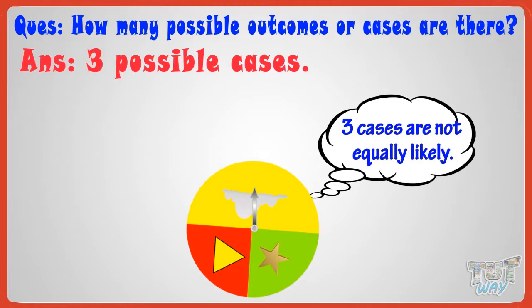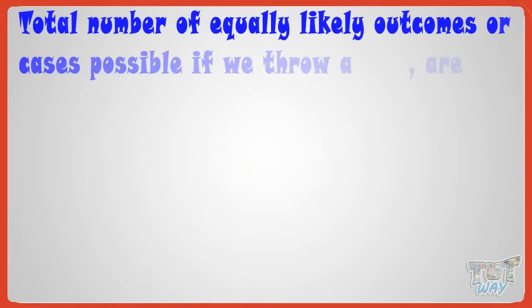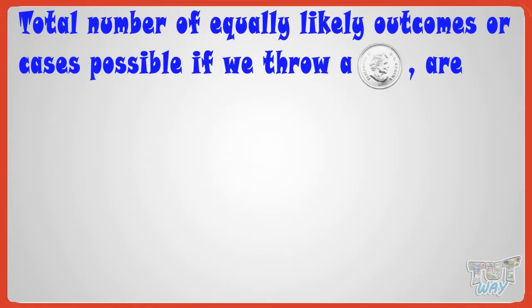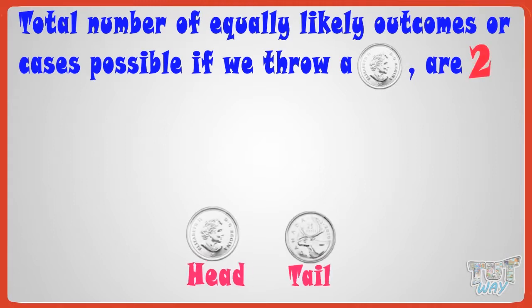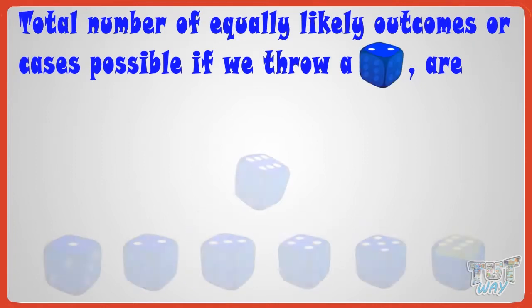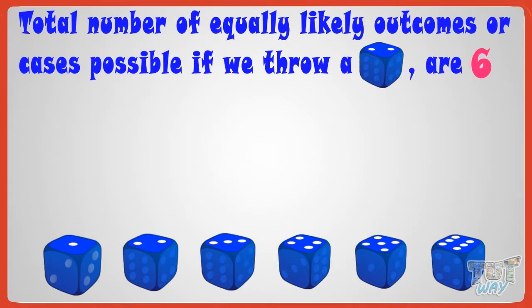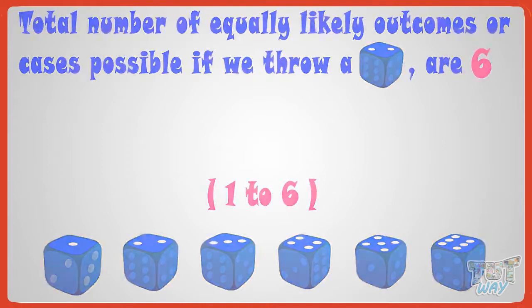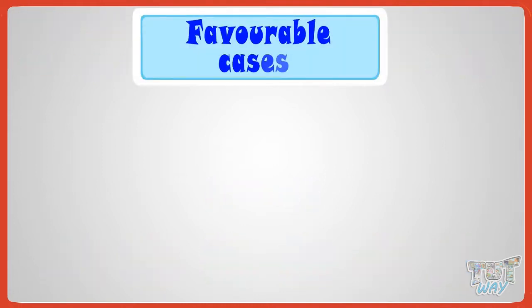So kids, we learned that the total number of equally likely outcomes or cases possible in an experiment — if we toss a coin, they are two: head or tail. And in the case of a dice, equally likely cases are six: numbers one through six. Now let's learn another term — it is favorable cases, or favorable outcomes.